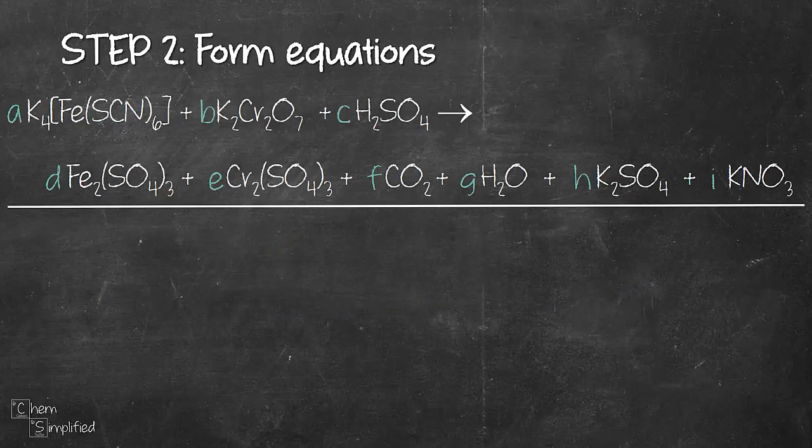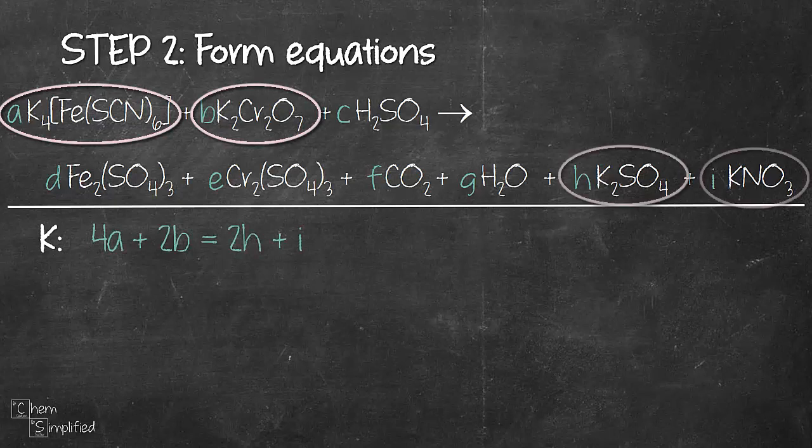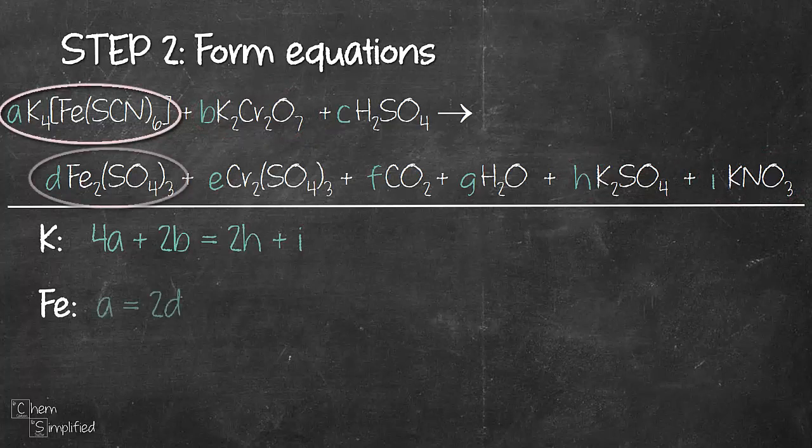Alright so now it's time to form some equations for each of the elements. So we're going to start with K. We have 4a plus 2b on the left and 2h plus i on the right. Next we have Fe. A on the left and 2d on the right. So that gives us a equals 2d.